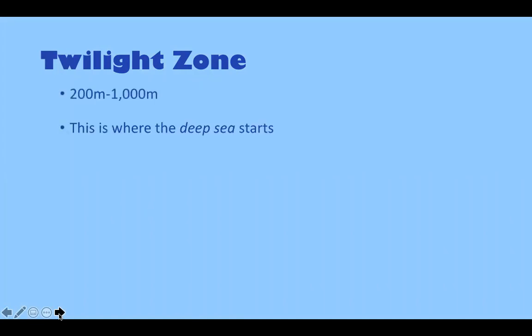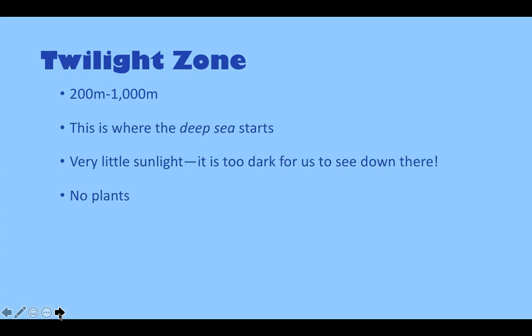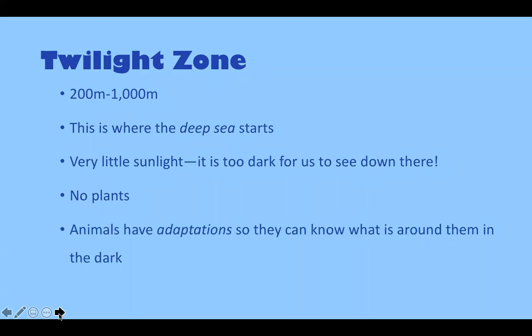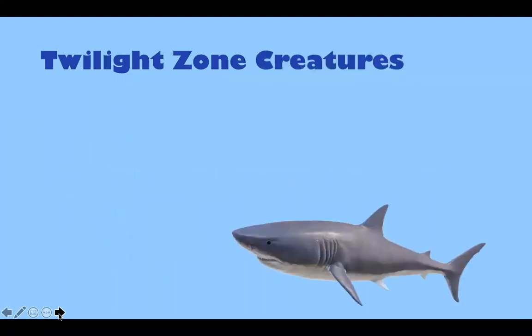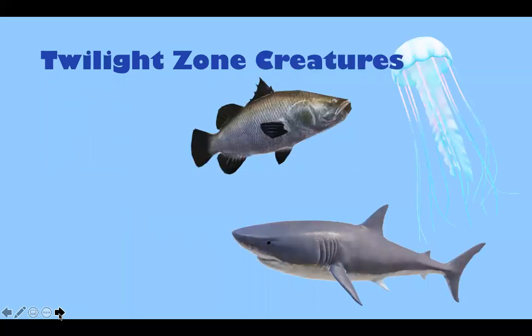The next zone is the twilight zone, which goes from 200 to 1,000 meters. This is where the deep sea starts. There is very little sunlight — it would be too dark for us to see down there — and because there's very little sunlight, there are no plants. Animals have adaptations so they know what is around them in the dark. Adaptations are things that animals develop in order to better survive in their environment. Some examples of twilight zone creatures include great white sharks, jellyfish, fish such as haddock, hermit crabs, clams, and starfish.